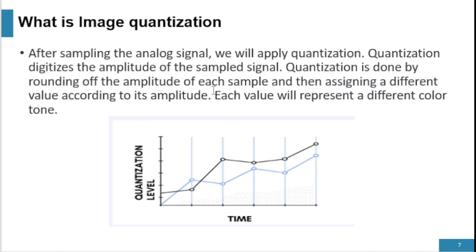Quantization is done by rounding off the amplitude of each sample and then assigning a different value according to its amplitude. We assign values to each pixel, to each coordinate point, according to their own properties. Each value will represent a different color tone. This graph shows the quantization levels — each interval has different values. For example, we assign values 1, 2, 3, 4, 5, and each interval according to its scale point has a different value, with its own color tone.